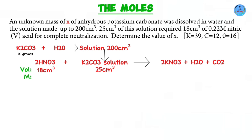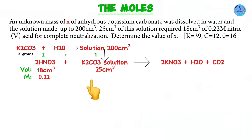Looking at the balanced equation, the mole ratio is 2 to 1. Two moles of nitric acid will react with one mole of potassium carbonate. We cannot go directly to X grams because information on it is limited. So we will start by calculating moles of nitric acid, move on to potassium carbonate using the mole ratio, then work backwards to get the X grams in 200 cubic centimeters.